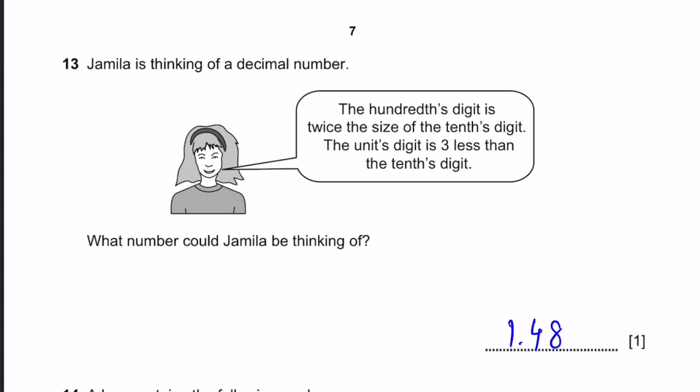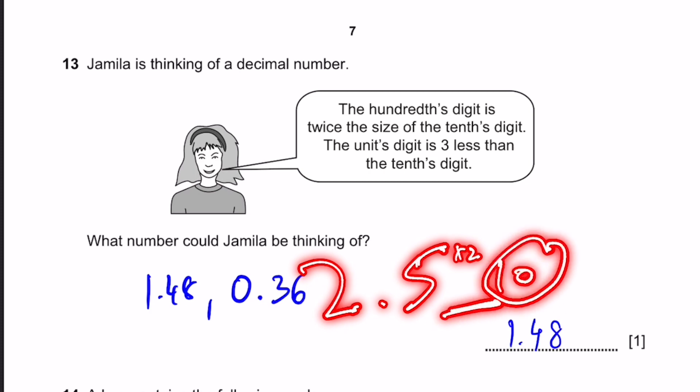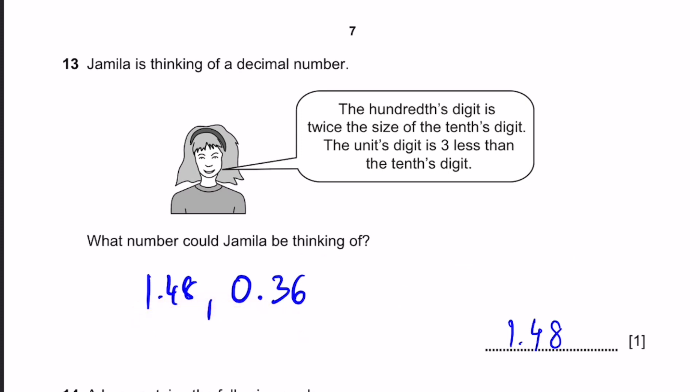So 1.48 is one of two possible answers. There's another answer which uses the unit's digit as 0. So 1.48 is one answer, and the unit's digit 0 makes it 0 point. If we add 3 to this, we get the tenths digit, which is 3. If we multiply by 2, we get 6, which is the hundredth digit. So it's either 1.48 or 0.36. If you put a 2, it'll be 2.5 because plus 3, then multiply by 2, we get 10, but 2 digits cannot take the place of just 1.